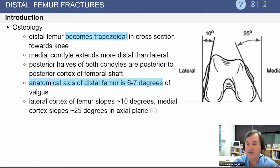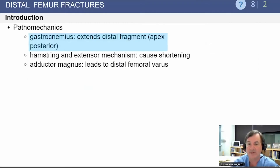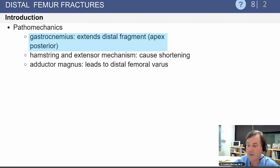Remember that the distal femur is trapezoidal in nature, and this is important when placing hardware. The anatomic axis of the distal femur is 6 to 7 degrees of valgus. The gastrocnemius extends the distal fragment posteriorly, which can make reduction difficult.